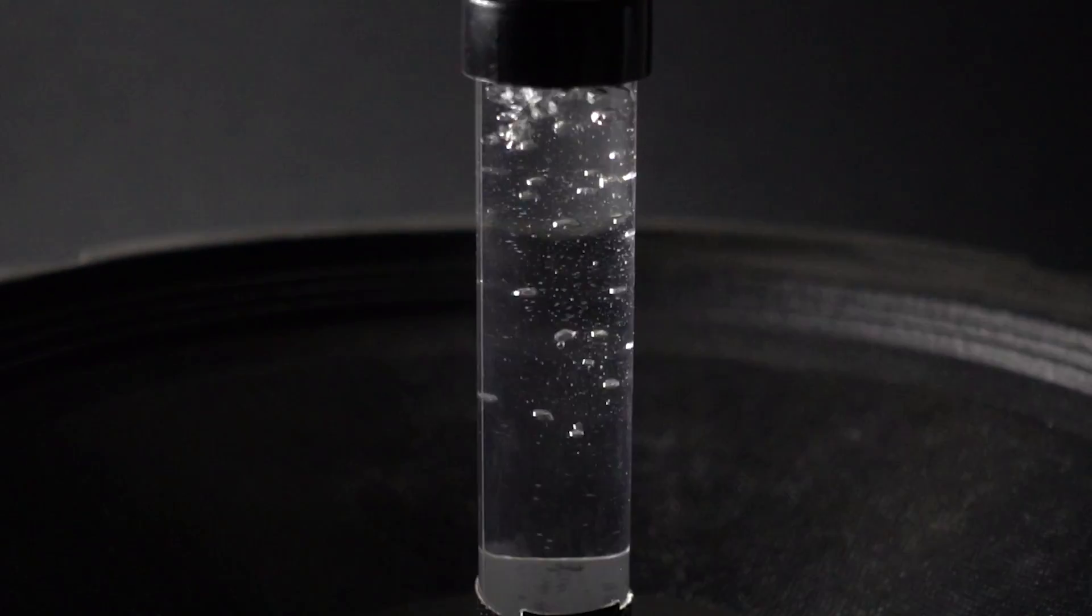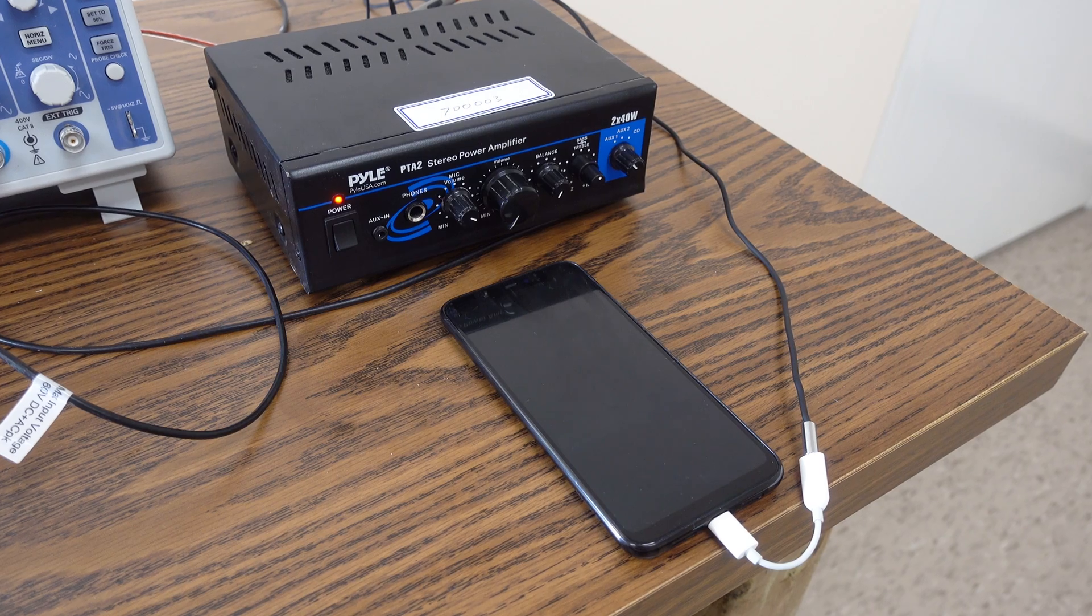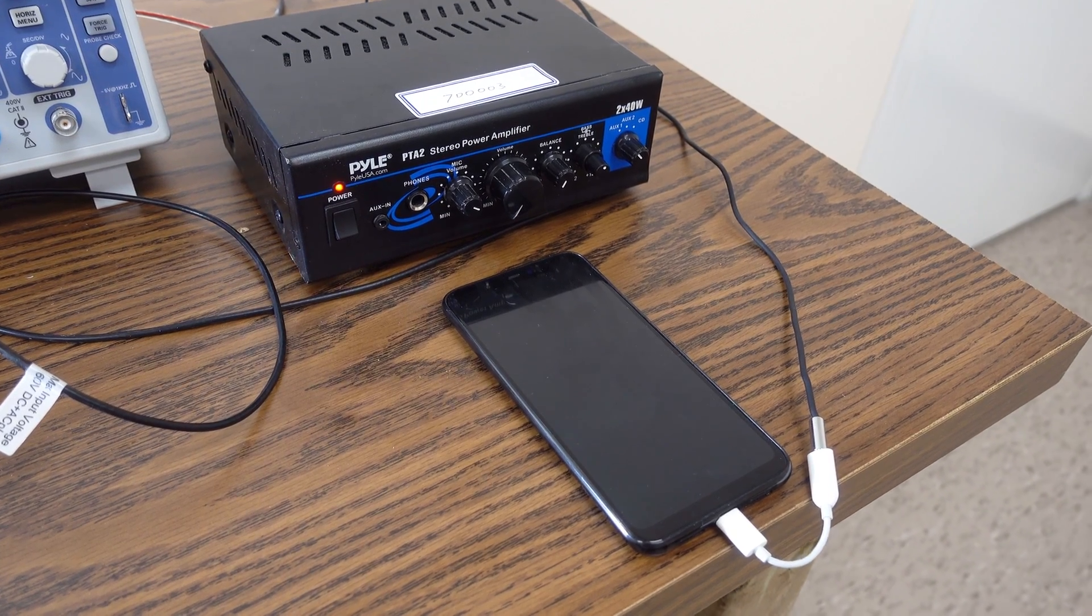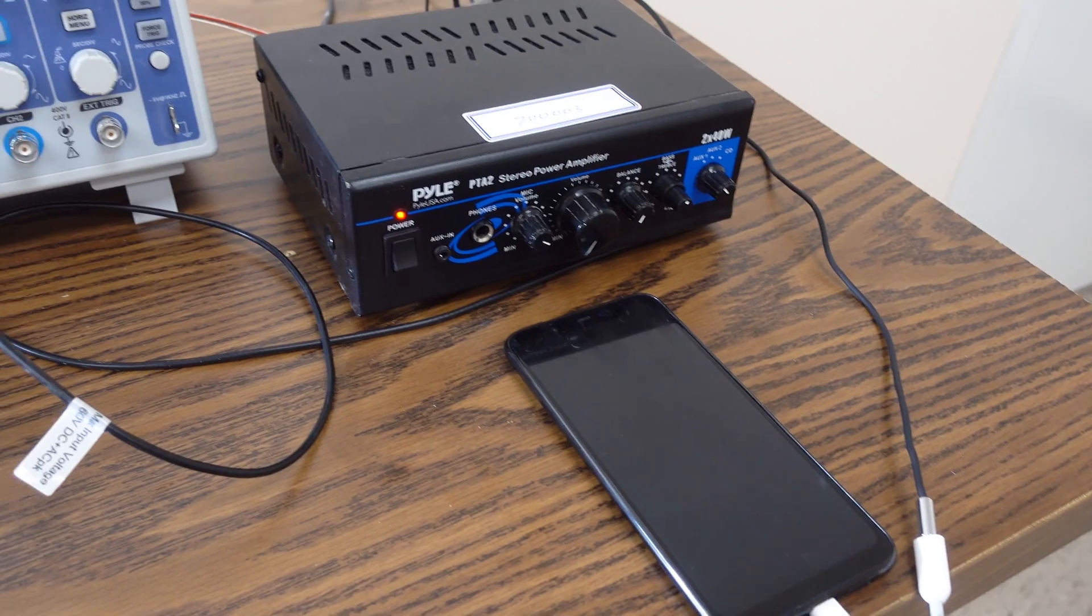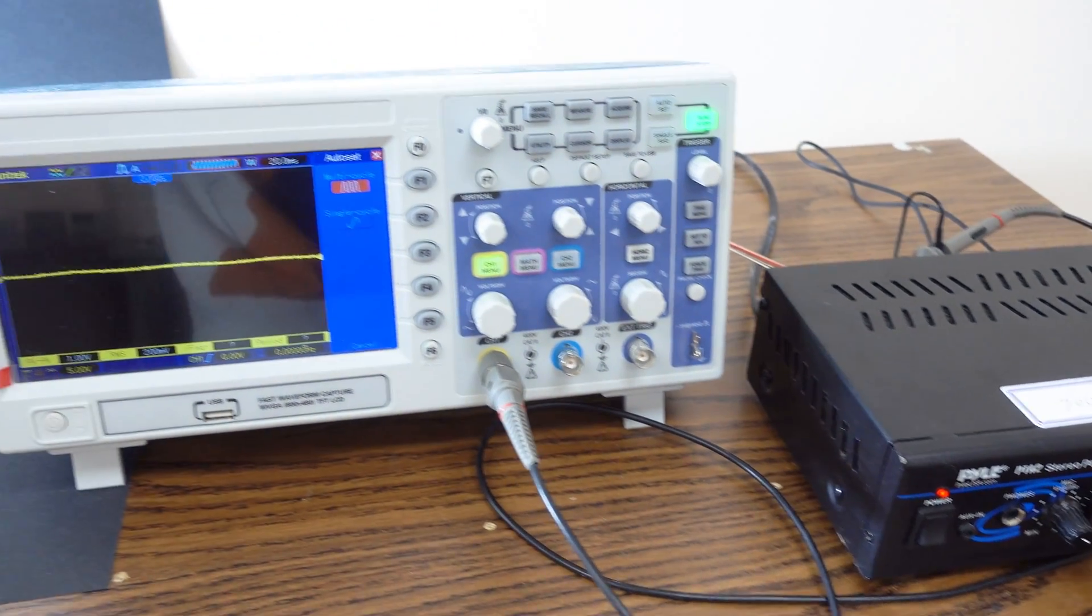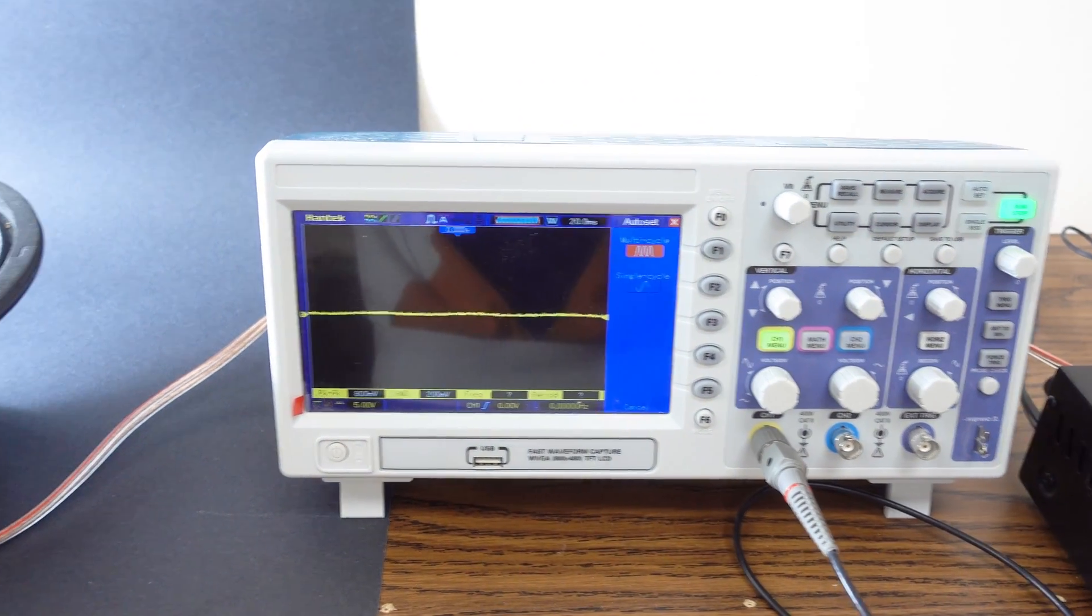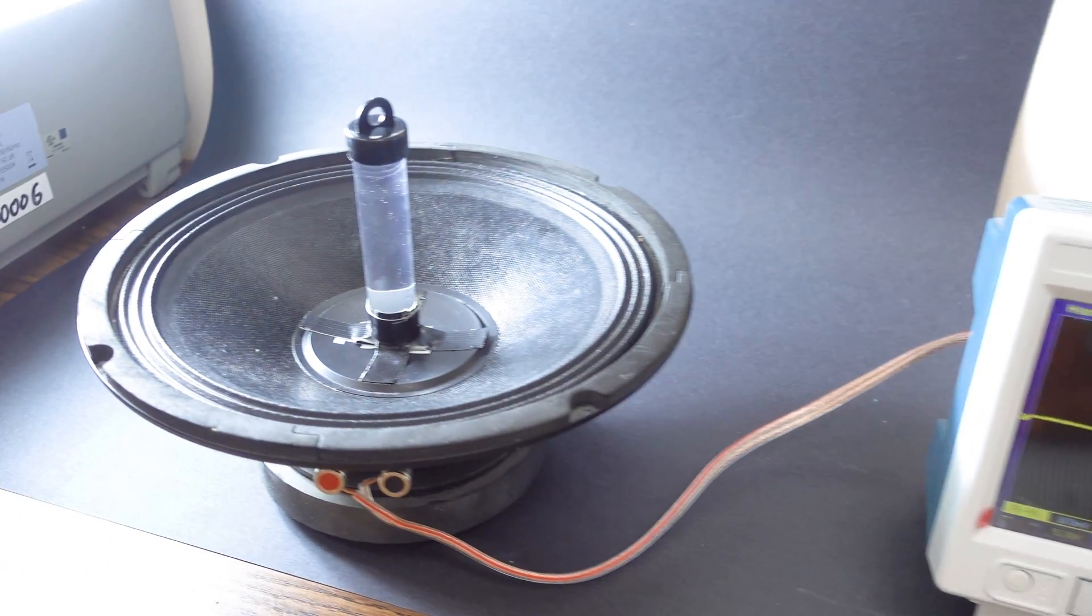We first generate a signal by using the signal generator on our phone. You can check out how to use this app in our last video. Next, this signal gets fed into an amplifier, and this amplifies the signal and feeds that into our loudspeaker.